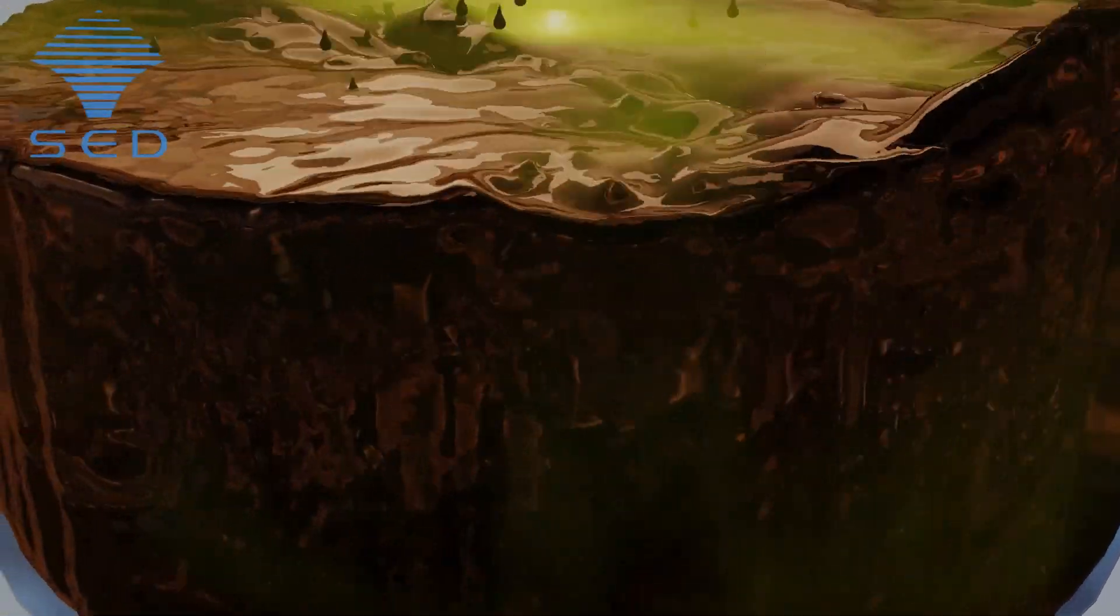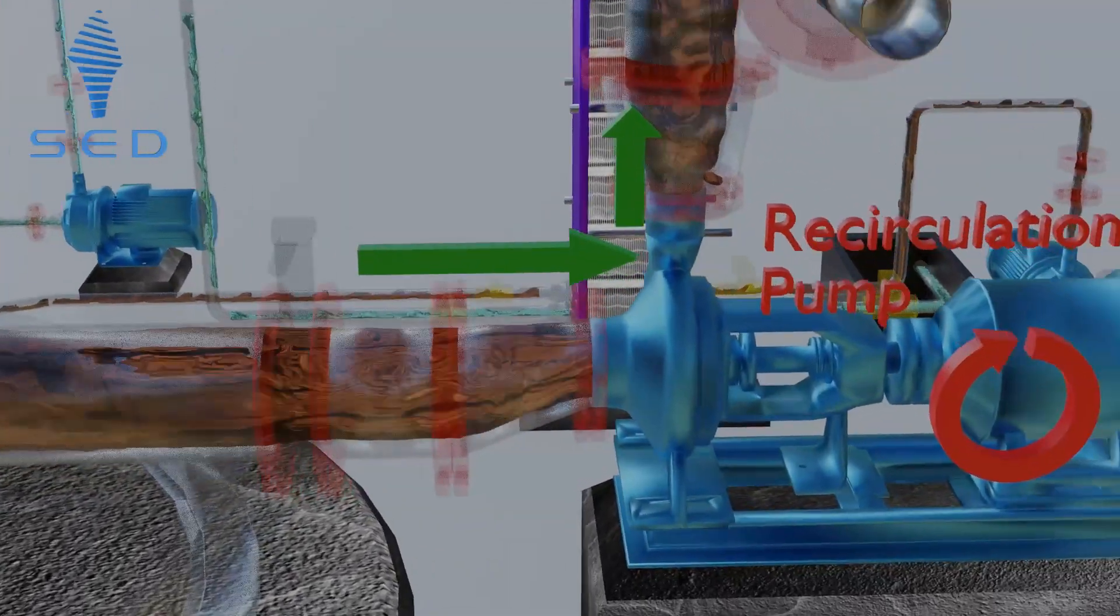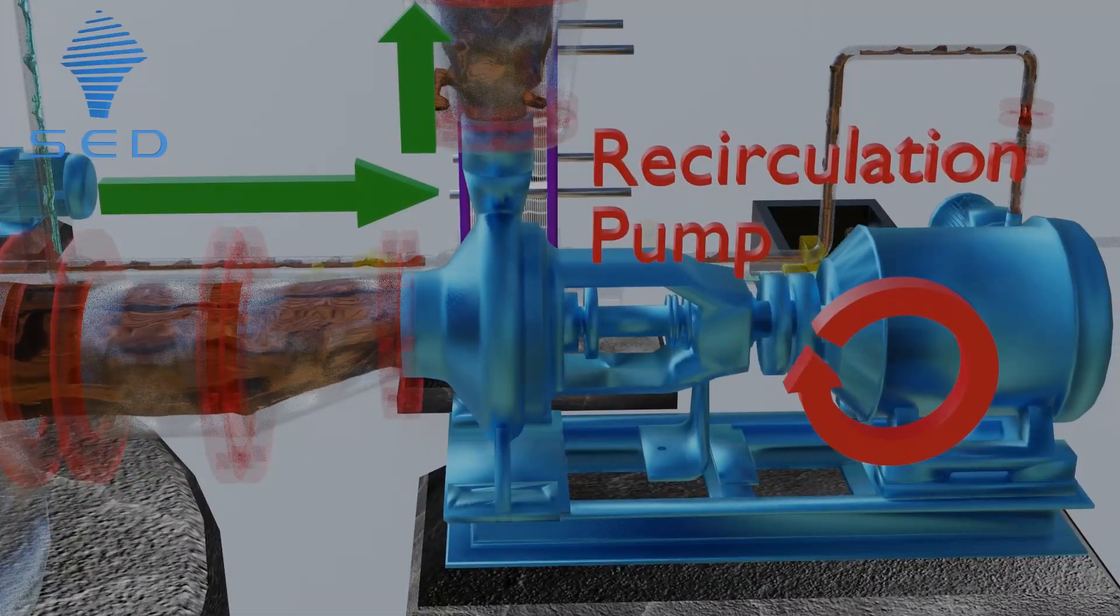After attaining a certain level in the inner tank, the hot feed is circulated by a recirculation pump to the distribution system of the low temperature evaporator.